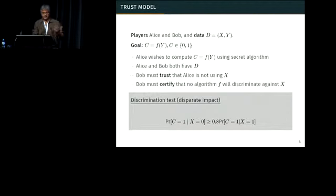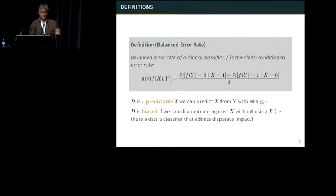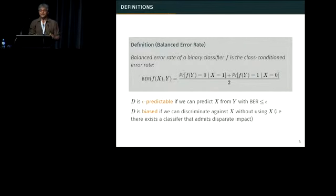Given an algorithm and given this trust model, can we determine if the algorithm is liable for a claim of disparate impact — that is, somehow implicitly discriminating against one group, X? It turns out what you need is not a standard notion of error measurement that you do in machine learning. You want something different called a balanced error rate, which is basically the class-conditioned error rate. You look at the error rate for each class — X equal to 1 or X equal to 0 — separately, and then you average them out. This is very important because in a lot of training problems the minority class usually has very little data, and if you just use standard accuracy it's very easy to ignore errors you make on the minority class and thereby hide discrimination.